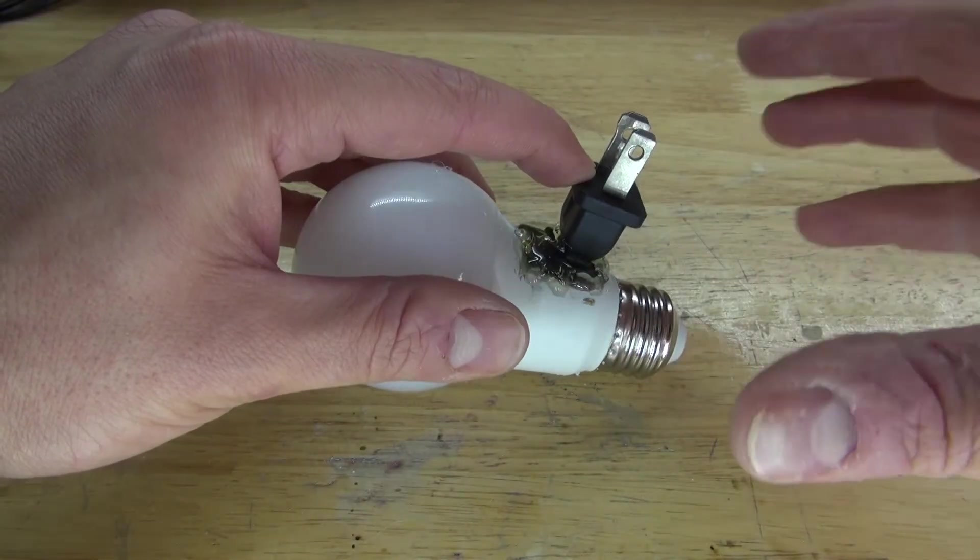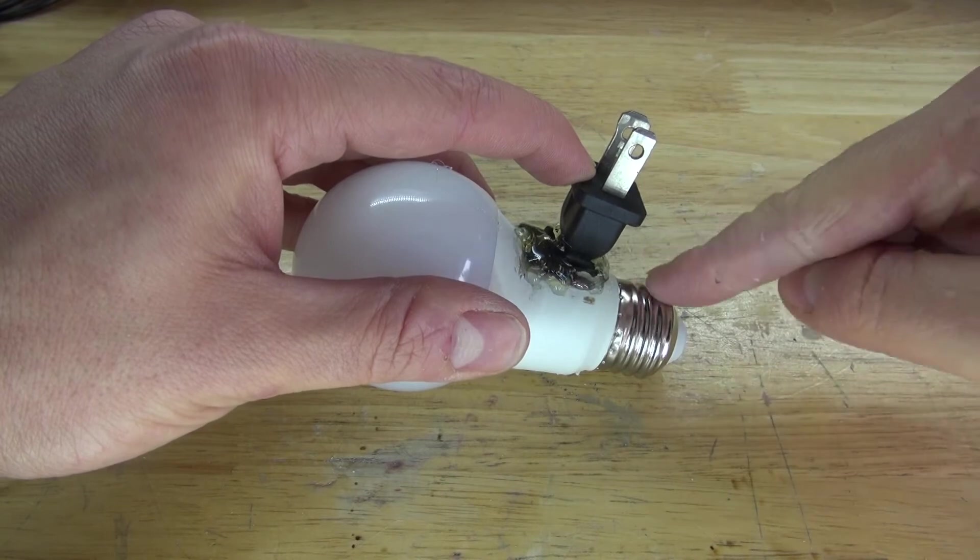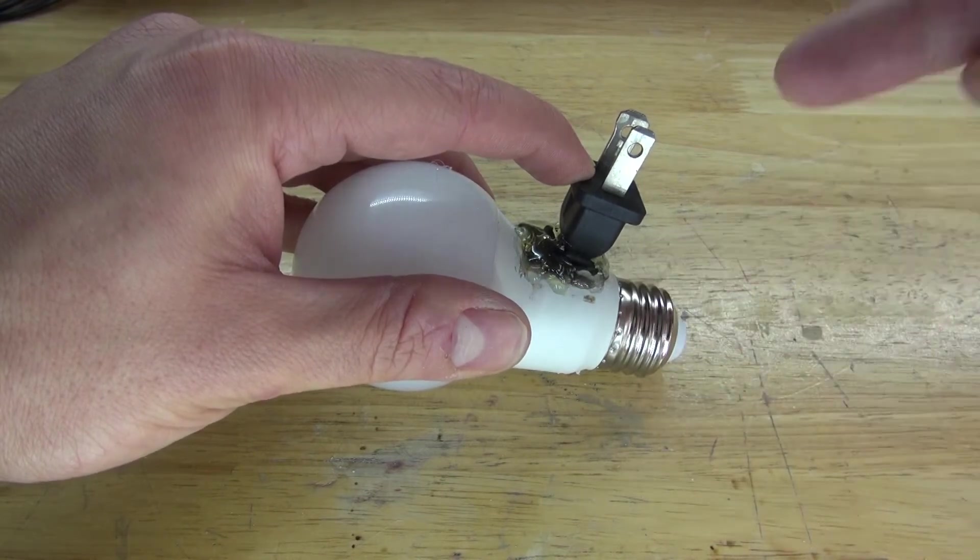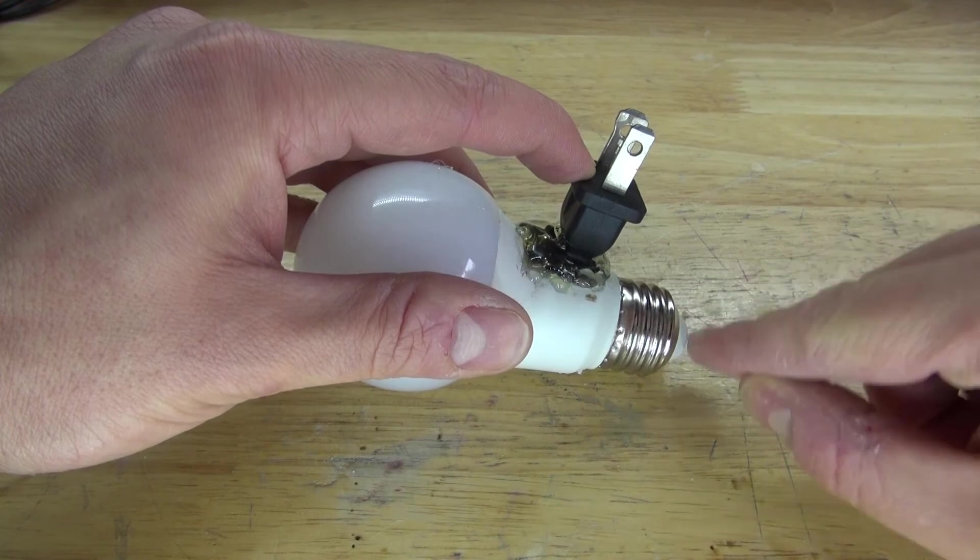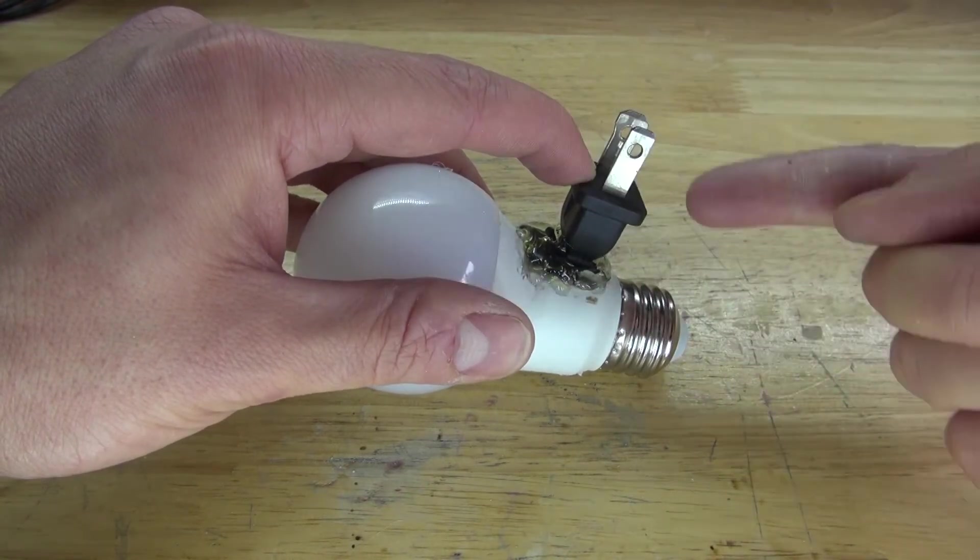And now you may be wondering, won't you get shocked if you touch the light bulb? No, because these two points are no longer connected. They're only connected to the electrical cord. So it's perfectly safe to touch.